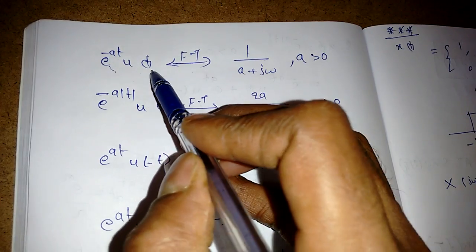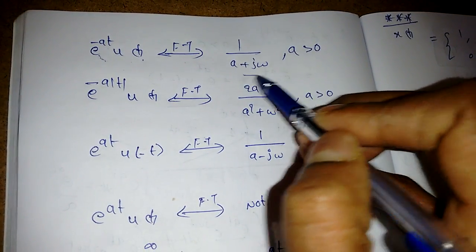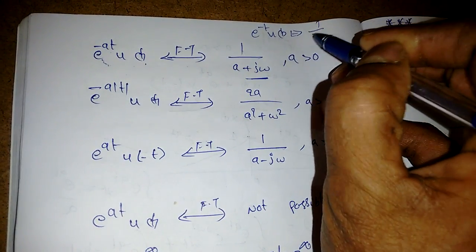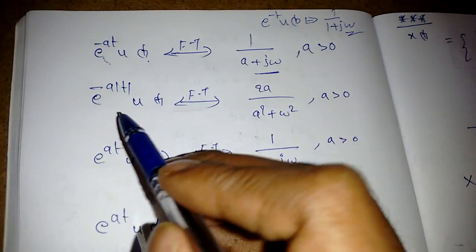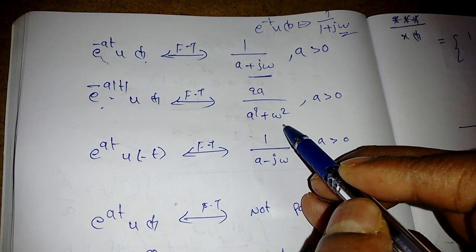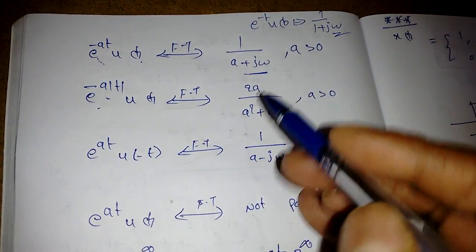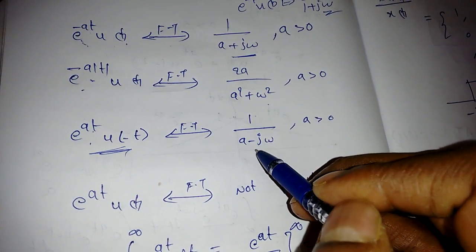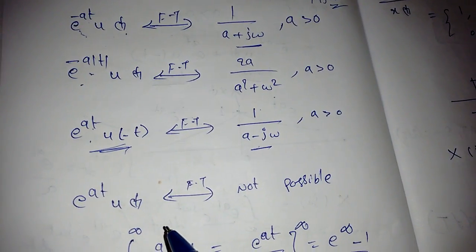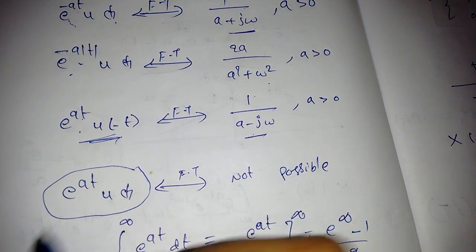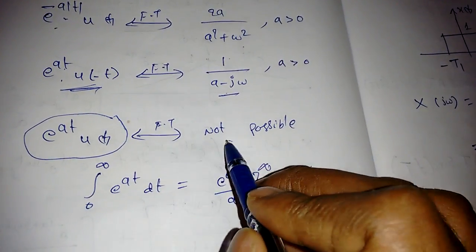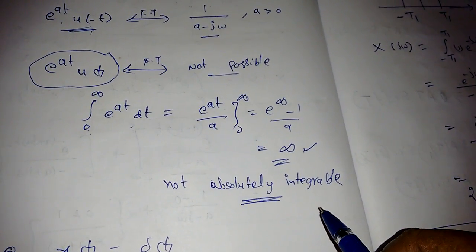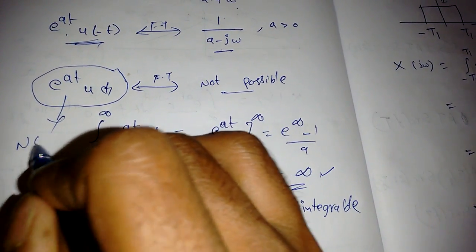Summary of key transforms: e^(−at)·u(t) → 1/(a + jω); for example e^(−t)·u(t) → 1/(1 + jω). e^(−a|t|) → 2a/(a² + ω²). e^(at)·u(−t) → 1/(a − jω). Note that e^(at)·u(t) has no Fourier transform because the integral from 0 to infinity of e^(at) dt diverges — it is not absolutely integrable.